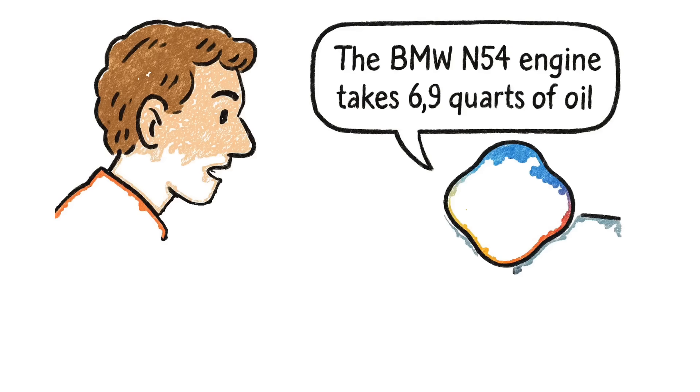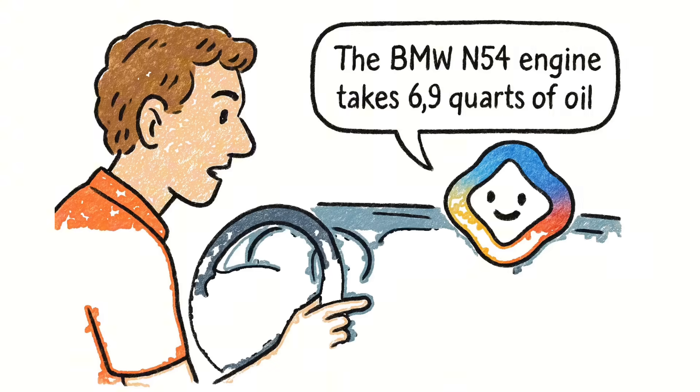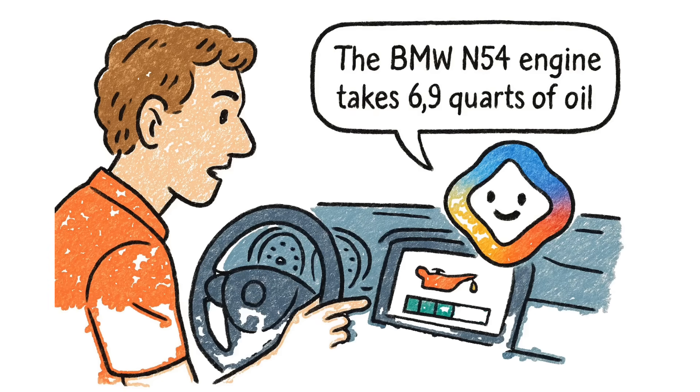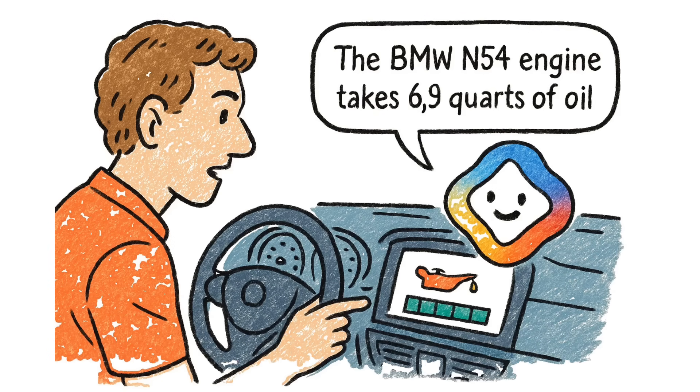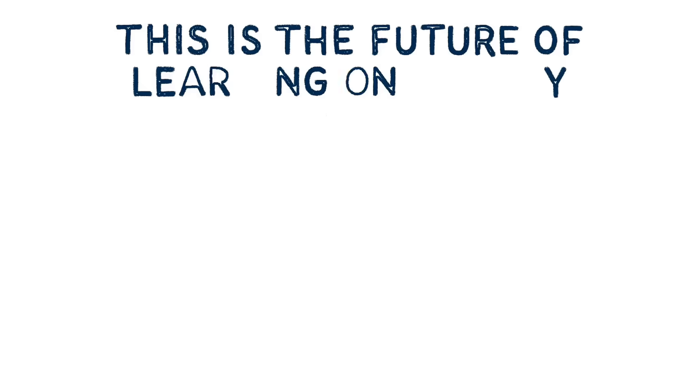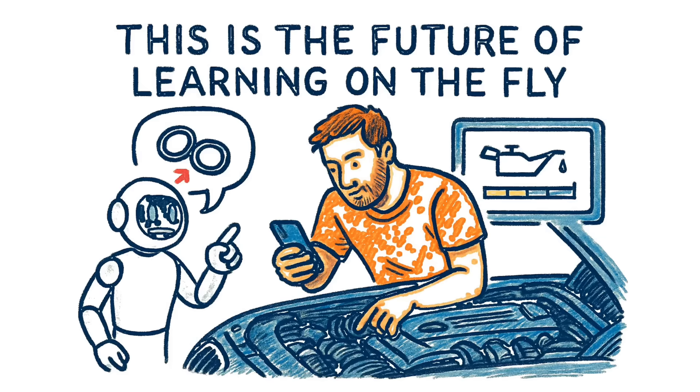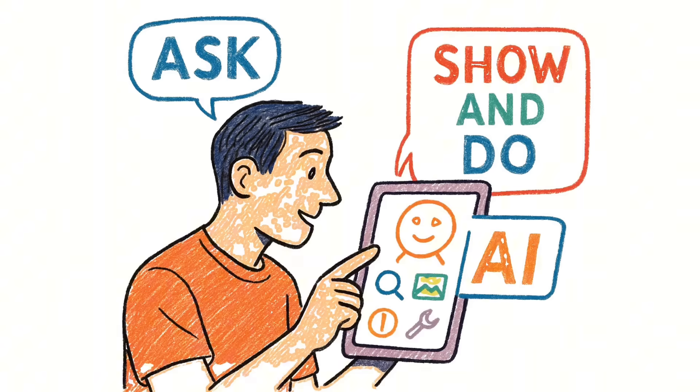Gemini spots it immediately, points out the two tiny O-rings that absolutely have to be replaced, and even explains the best way to pry them off without damaging anything. To finish the job, it tells him the BMW N54 engine takes precisely 6.9 quarts of oil, notes that there's no physical dipstick, and then walks him through using the electronic oil level sensor on the dashboard. This is the future of learning on the fly. No more searching. Just ask, show, and do.